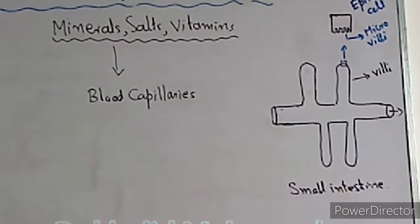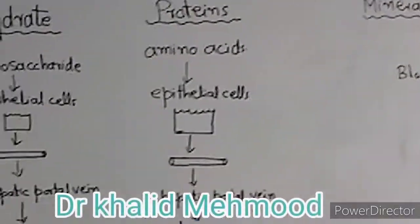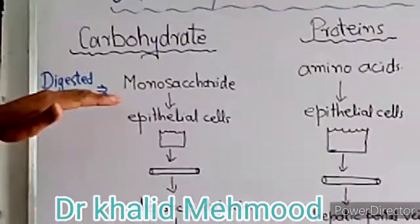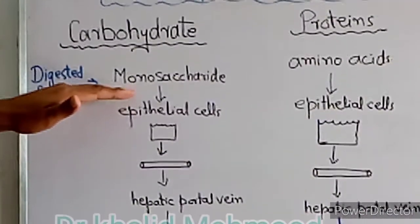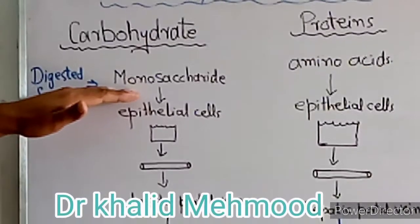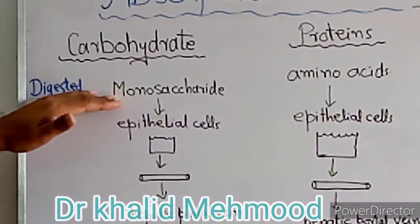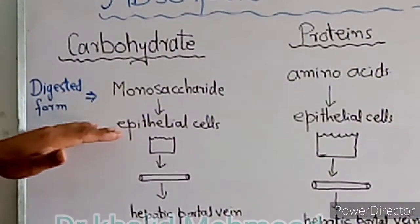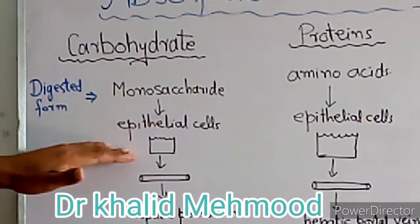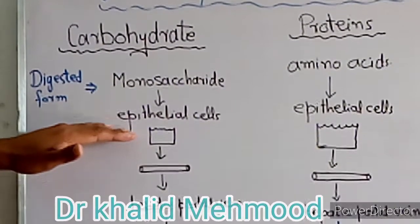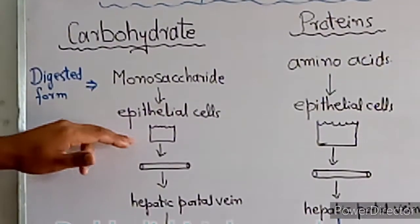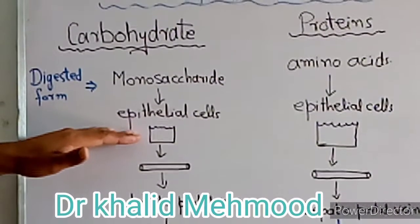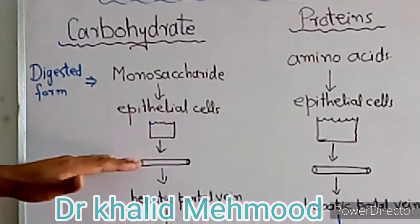Now, this is the carbohydrate which is digested — in its digested form, which is the monosaccharide form — in this small intestine. In the epithelial cells, during the diffusion process, the monosaccharide form will enter the epithelial cells.